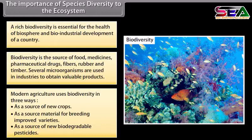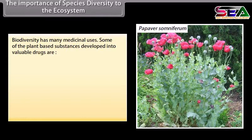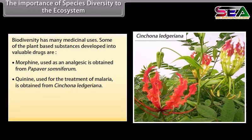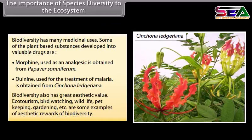Biodiversity has many medicinal uses. Some plant-based substances developed into valuable drugs include: Morphine, used as an analgesic, obtained from Papaver somniferum; and Quinine, used for the treatment of malaria, obtained from Cinchona ledgeriana. Biodiversity also has great aesthetic value — ecotourism, bird watching, wildlife, pet keeping, and gardening are some examples of aesthetic rewards of biodiversity.